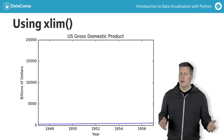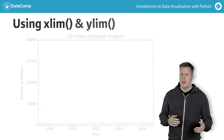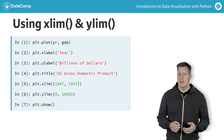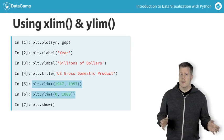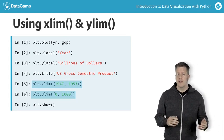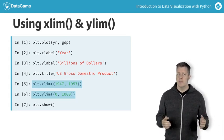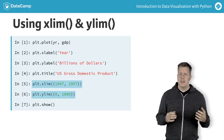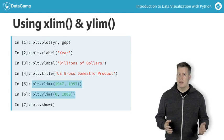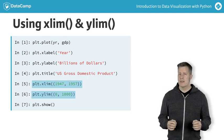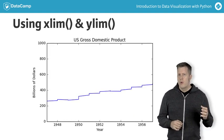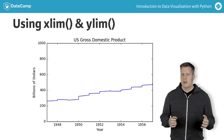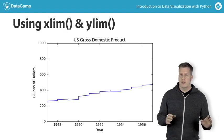There's a similar command, Ylim, that we can use to specify the upper and lower limits of the Y axis. We'll use Xlim to zoom in on the years 1947 to 1957, and follow it with the Ylim command to clip the vertical axis from 0 to 1000. We can see the growth more clearly, but it's still a little flat.